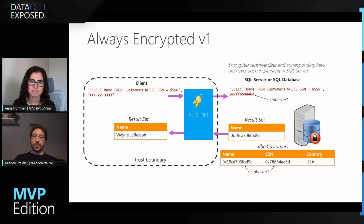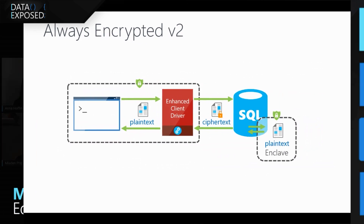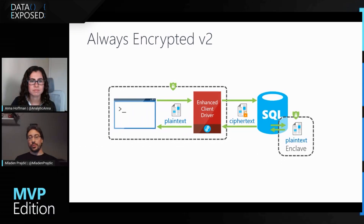This is where version two comes in. Version two, which was introduced in SQL Server 2019, introduced the concept of a secure enclave. Basically, what this does is it takes a memory space on your SQL Server, puts the encrypted data into that memory space, decrypts it there, makes the operations of pattern matching that you want to do there, and then returns the encrypted data back to the client. Otherwise, it behaves the same as Always Encrypted version one.